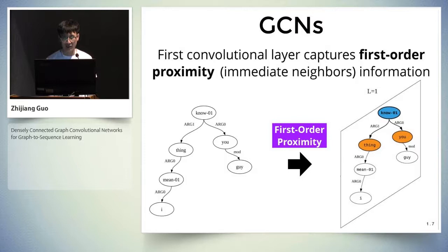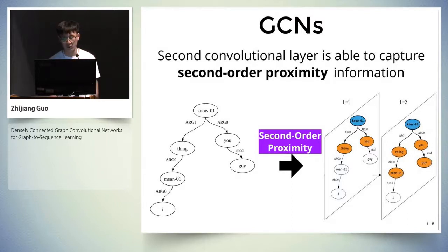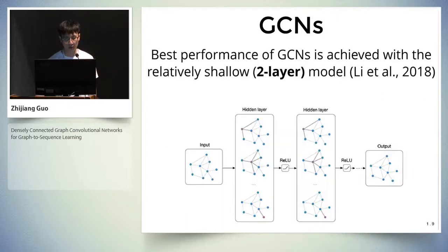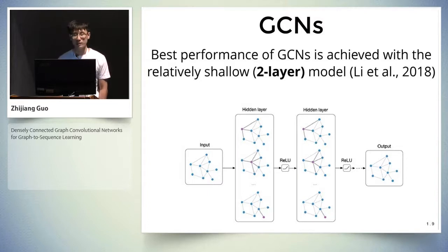For example, the interaction between the node highlighted in blue and the two nodes highlighted in orange can be captured in the first graph convolutional layer. For the second layer, it is able to capture second-order proximity information — the interaction between the node highlighted in blue and two additional nodes highlighted in orange. Intuitively, a deeper GCN model is able to capture rich local and non-local information on a large graph. However, previous research shows that the best performance of the GCN model is achieved with a relatively shallow architecture, the two-layer model.